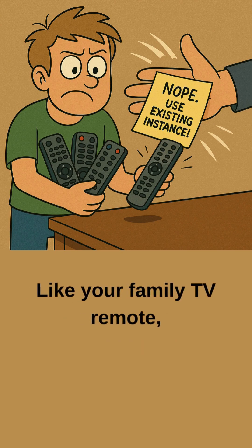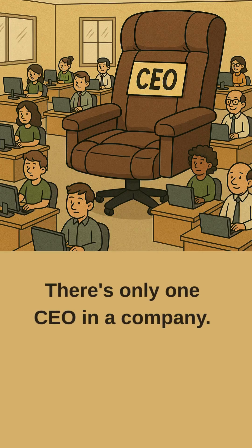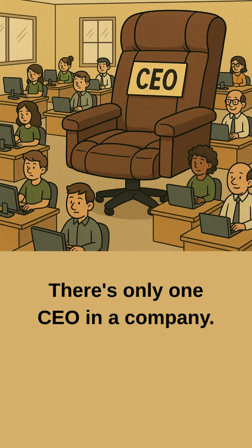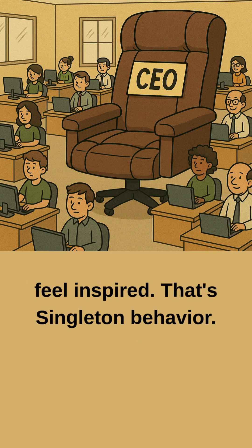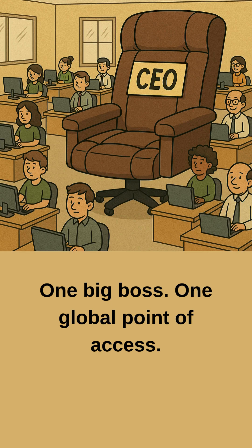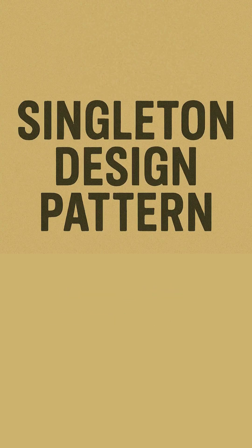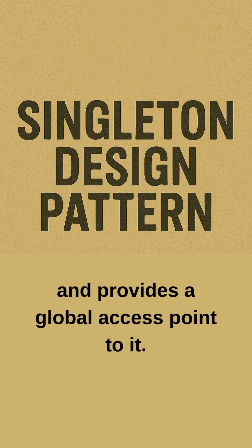Like your family TV remote, or the office coffee machine no one cleans. There's only one CEO in a company. You can't just spawn a new one every time you feel inspired. That's Singleton behavior — one big boss, one global point of access. A design that ensures your class has only one instance and provides a global access point to it.